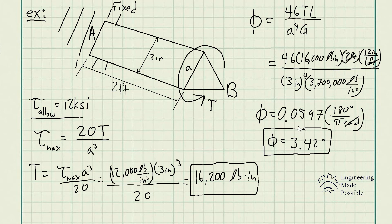When it comes to other methods of solving, such as statically indeterminate torque-loaded members when solving for unknown torques or torque reactions in a given system, the method is still the same. The only thing that changes are the equations you'll be using for the maximum shear stress and the angle of twist, so just keep that in mind.